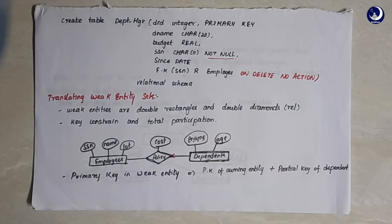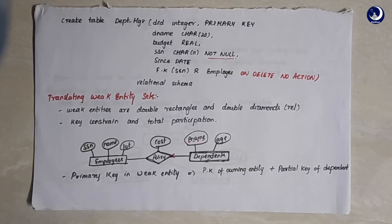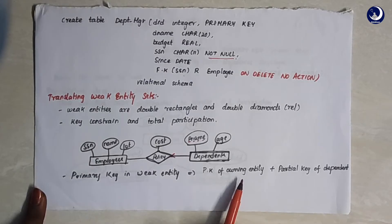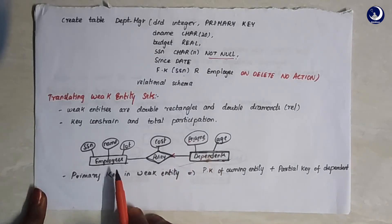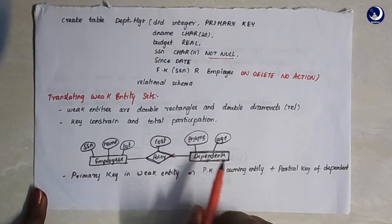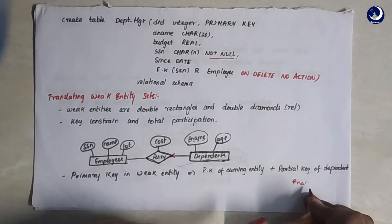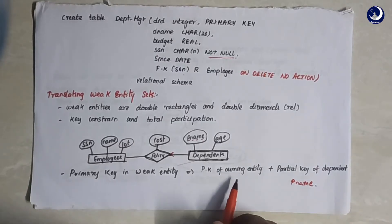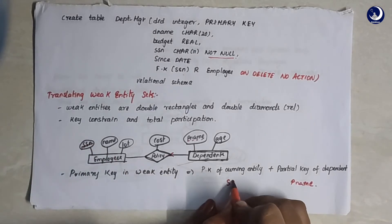Now let's look at translating weak entity sets to relations. This is similar to translating a regular entity set, except that the primary key of a weak entity is formed by combining the partial key of the weak entity with the primary key of the owning entity. In our example involving employees, policy, and dependents: pname is the partial key of the dependents entity. So the primary key of the dependents table will be the combination of pname and SSN.